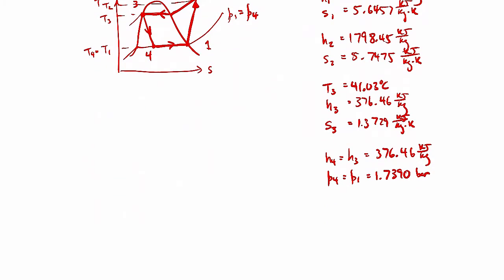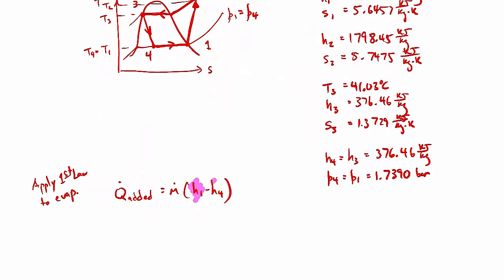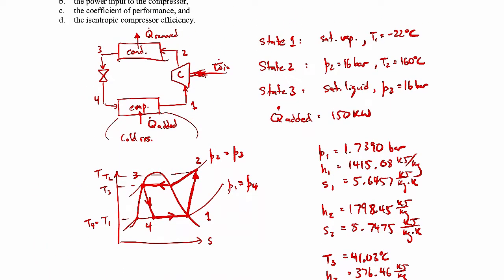To get the mass flow rate, we apply the first law to the evaporator, drawing a control volume around it. The result is that ṁ = Q̇_added / (h1 − h4). We know h1, h4, and Q̇_added = 150 kW, so we can solve for ṁ. Plugging in those numbers, the mass flow rate comes out to be 0.144 kilograms per second.